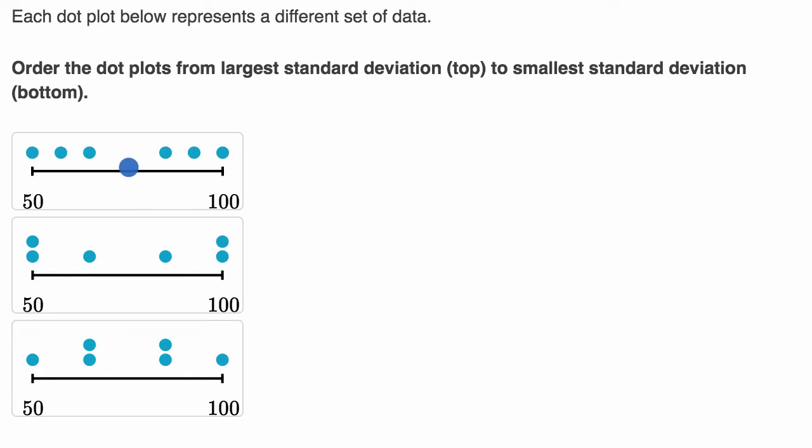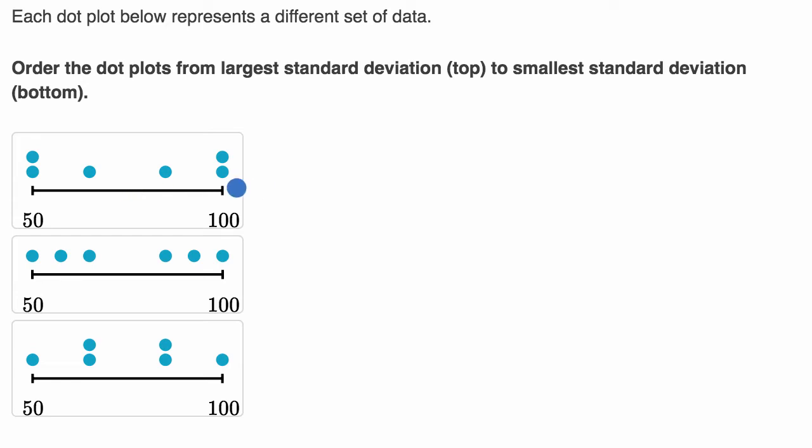And if you look at this first one, it has these two data points, one on the left and one on the right, that are pretty far, and then you have these two that are a little bit closer, and then these two that are inside. This one right over here, to get from this top one to this middle one, you essentially are taking this data point and making it go further, and taking this data point and making it go further. And so this one is going to have a higher standard deviation than that one.